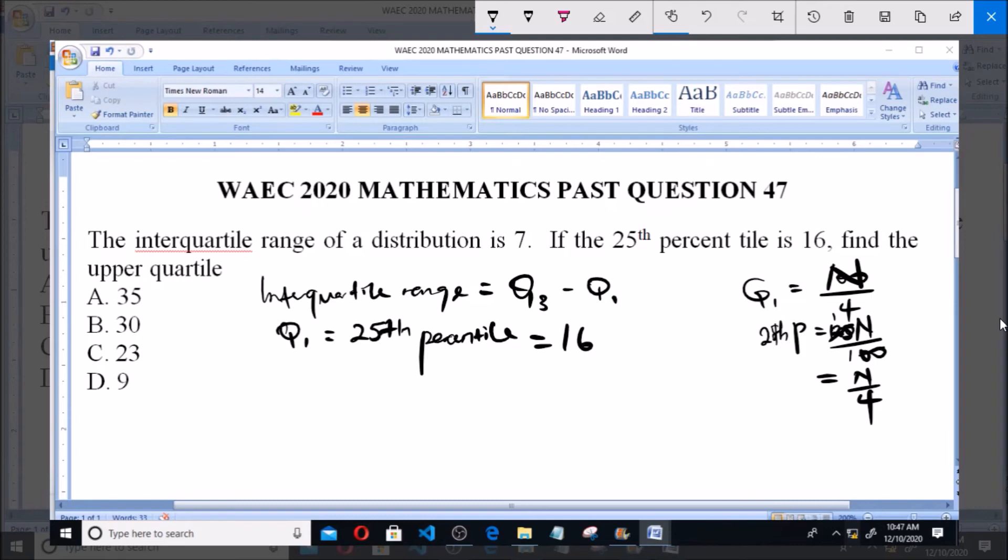So interquartile range is 7, so we can now say 7 equals Q3 minus Q1, which is 16. Therefore Q3 equals 7 plus 16, and that is equal to 23.